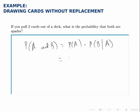The probability that the first card is a spade is 13 out of 52, because there are 13 spades and 52 total cards.